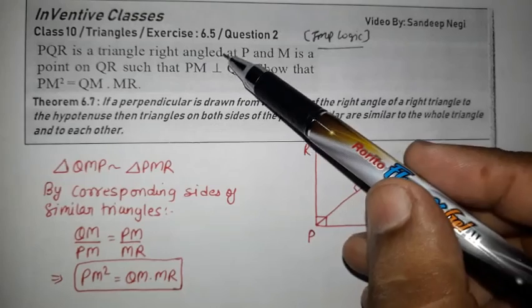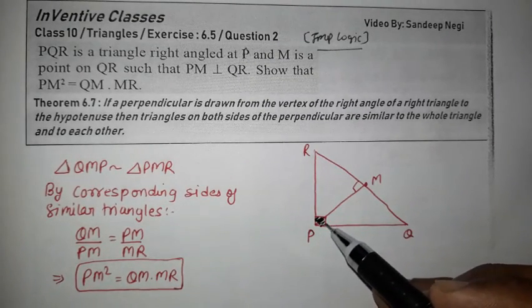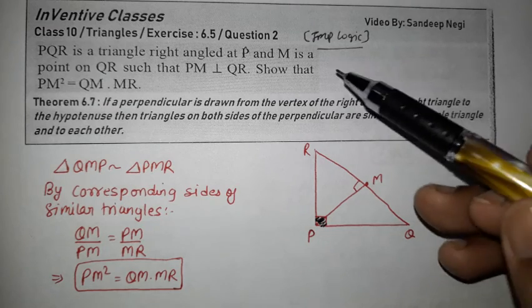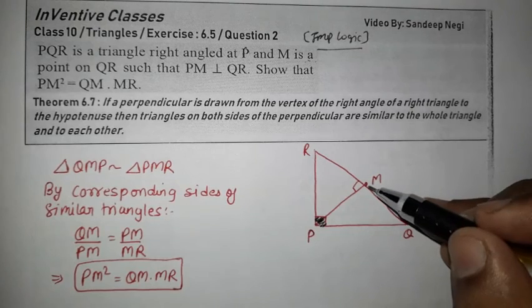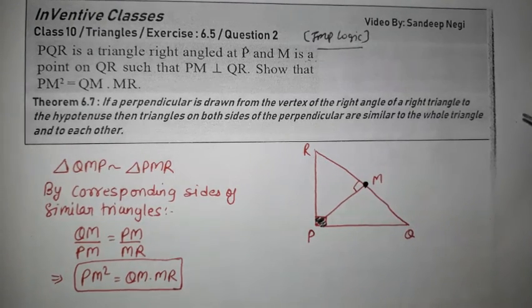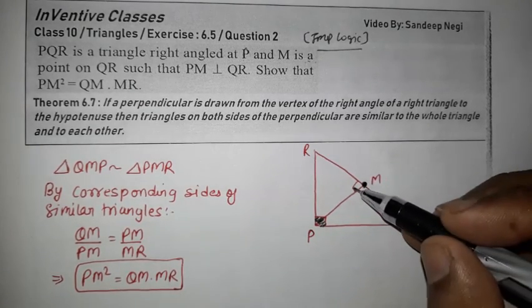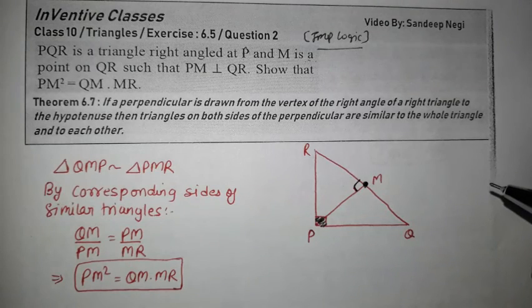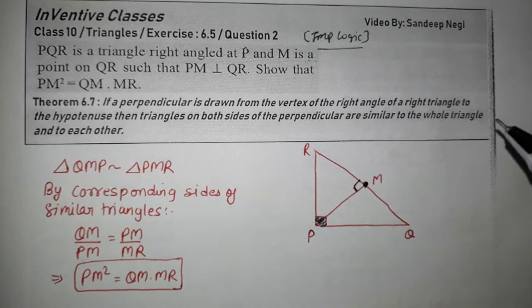PQR is a right angle triangle at P, so P is making 90 degrees. M is a point on QR such that PM is perpendicular to QR. This has been given to you. So show that PM² is equal to QM times MR.